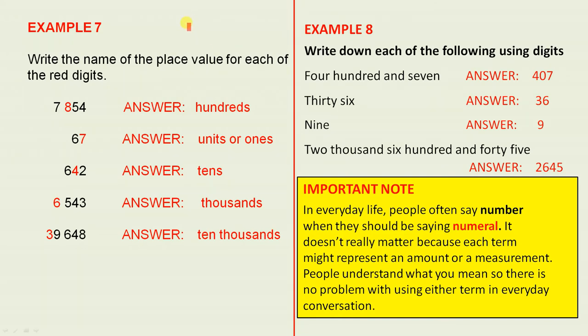Example 7. Now we're writing the name of the place value for each of the red digits. Units, tens, hundreds, so that's in the hundreds column. The 7 is in the first one to the right, so it's units or ones.